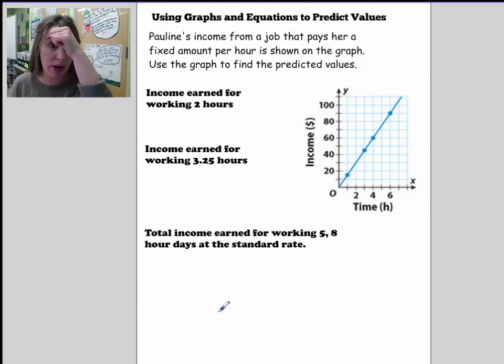Let's try another one. Pauline's income from a job that pays for a fixed amount per hour is shown on the graph. Use the graph to find the predicted values. So we want to find the income earned for 2 hours and the income earned for 3.25 hours.